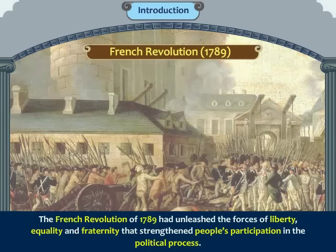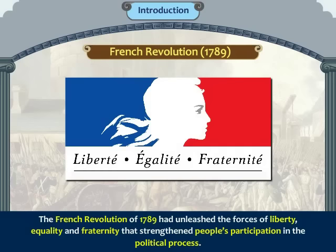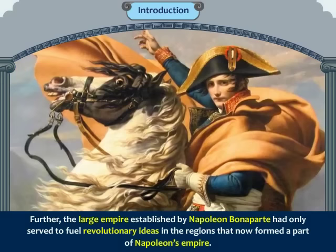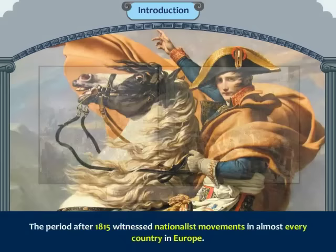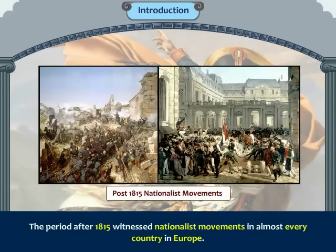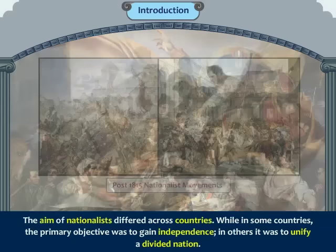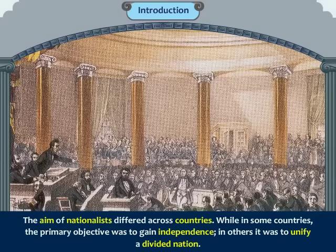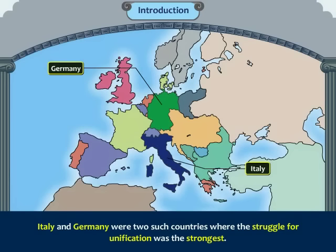The French Revolution of 1789 CE had unleashed the forces of liberty, equality and fraternity that strengthened people's participation in the political process. The large empire established by Napoleon Bonaparte had only served to fuel revolutionary ideas in the regions that formed a part of his empire. The period after 1815 witnessed nationalist movements in almost every country in Europe. While in some countries the primary objective was to gain independence, in others it was to unify a divided nation.